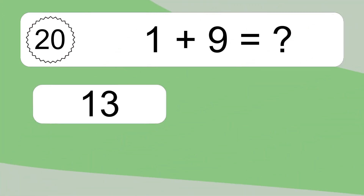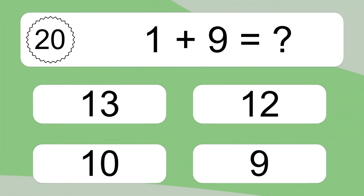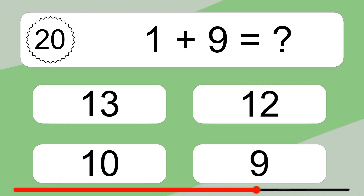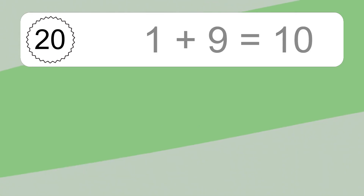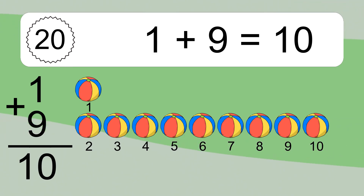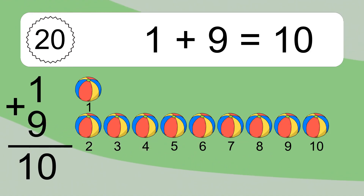One plus nine equals what? One plus nine equals ten. Let's count it: one, two, three, four, five, six, seven, eight, nine, ten.